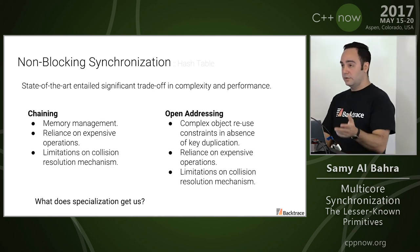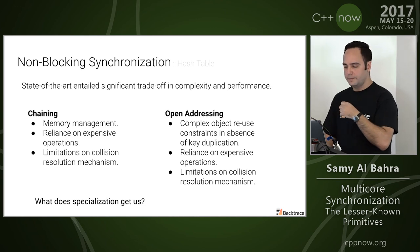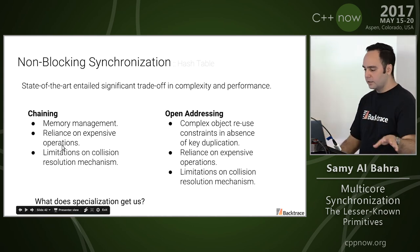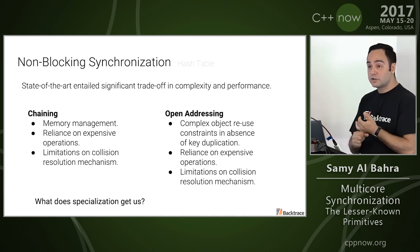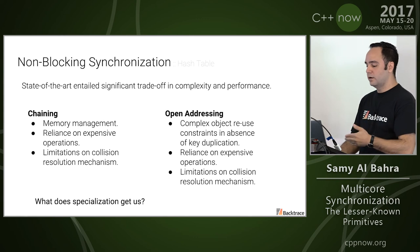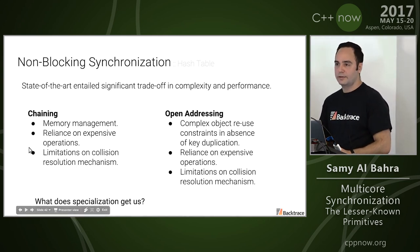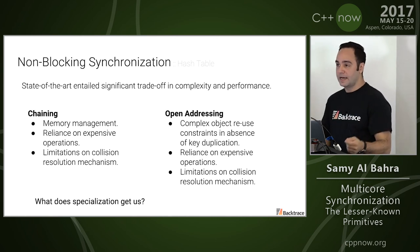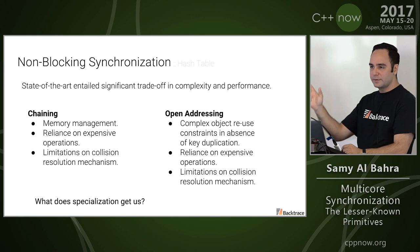Another very interesting example is hash tables. Out there in the literature, most people focus on generalized lock-free data structures — multi-reader, multi-writer — and those typically perform poorly, especially for an unmanaged language. You have chaining lock-free hash tables, but those require a fair amount of memory management, relying on things like RCU or epoch reclamation. They also typically rely on very expensive operations on the fast path and inhibit collision resolution mechanisms — the chaining mechanism itself is necessary to ensure the correctness of the algorithm, so you can't do more advanced things like sorting elements.